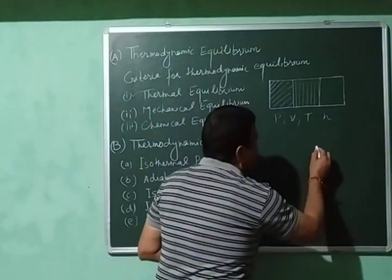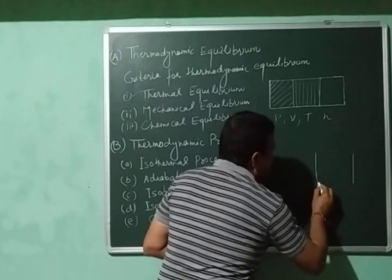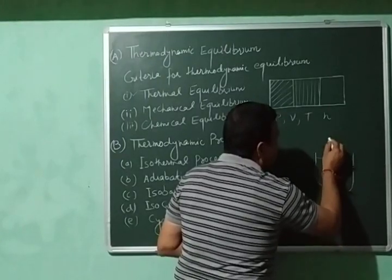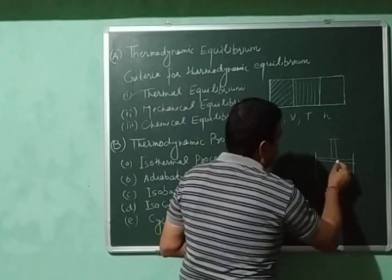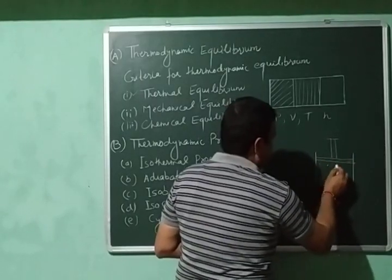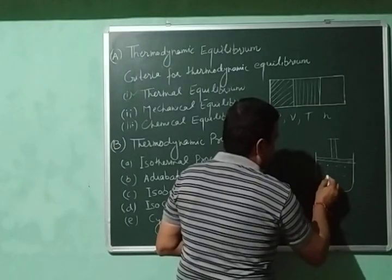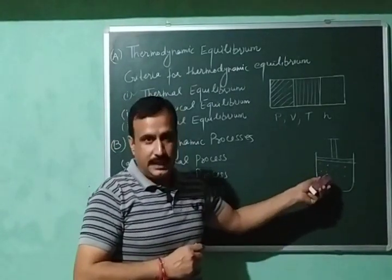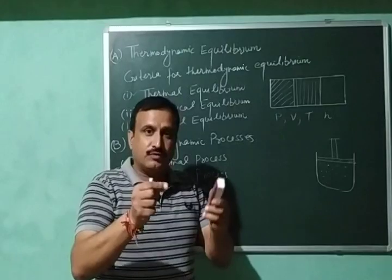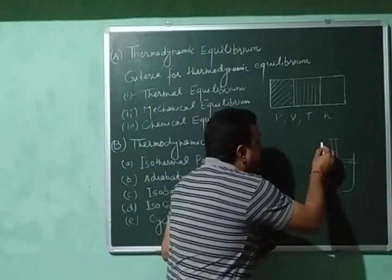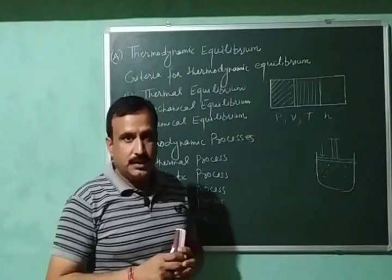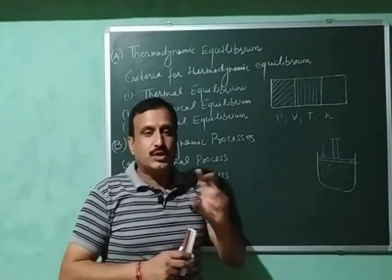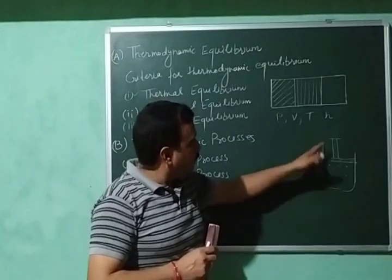For example, I have a gas enclosed inside a container fitted with a frictionless piston. This gas will have a certain pressure, which we call the internal pressure of the gas. Pressure is also acting from the outside — the external pressure — which is exerted by the piston and the atmosphere. So we have two types of pressure: internal pressure and external pressure.